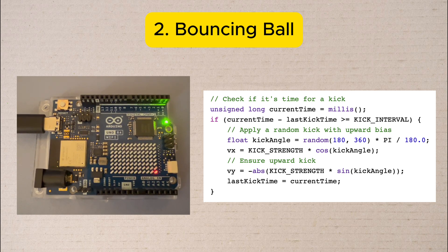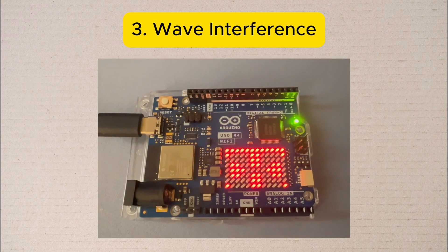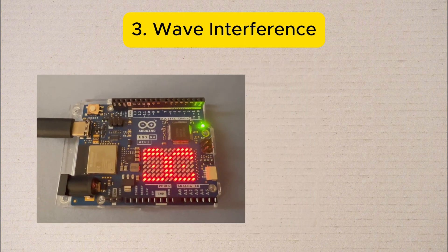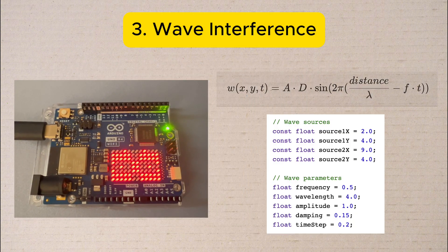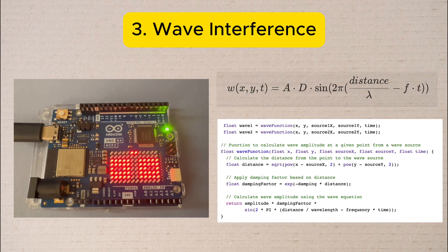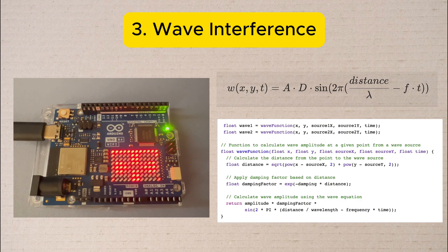Number three: Visualizing Wave Interference Patterns. We place two invisible wave sources on our matrix—imagine dropping two pebbles in a pond. Each wave spreads out in circles from its source just like ripples in water.